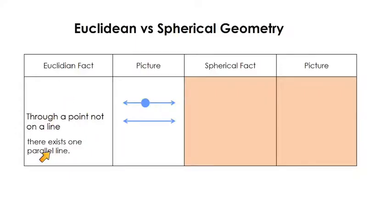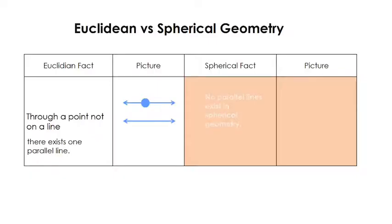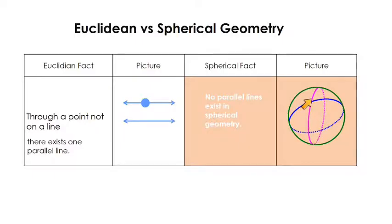Next: in Euclidean geometry, through a point on a line there exists one parallel line — this is like that fifth postulate from Euclid's Elements. If you have a line and a point not on that line, only one line is parallel to the given line passing through that point. But in spherical geometry, no parallel lines exist. Because our lines are great circles, and there's no way to draw two great circles that don't intersect.